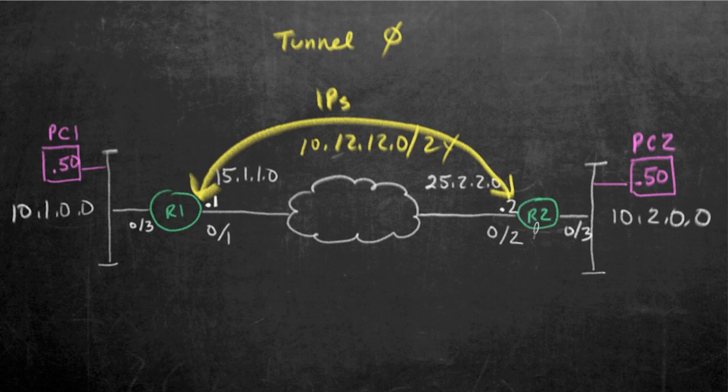One last thing we definitely want to do is make sure that right now R1 has a default route that goes that way, and R2 has a default route that goes that way. If we get a packet sourced from 10.1 PC1 that's going to 10.2, we want the router to use the tunnel interface and not its default route.